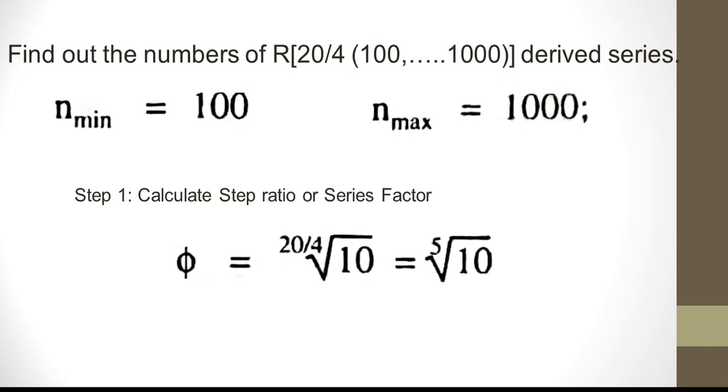Now 20/4 root of 10, but 20/4 is phi. So 5th root of 10 is 1.5849. Let us find out the numbers now.